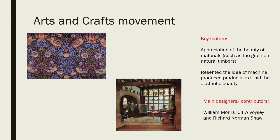The first movement is Arts and Crafts. This is a very beautiful design movement that appreciates the beauty of materials — things like the grain from natural timbers, with lots of nice hardwoods used. Everything should be made by hand; nothing machine-produced. The grain should be prevalent, and you might have stains or dyes, but you want to keep that natural look. They really did resent machine-produced products, believing there was no beauty behind them. It should be made by a very skilled craftsman who loves what they're doing. Main designers include William Morris and Richard Norman Shaw.